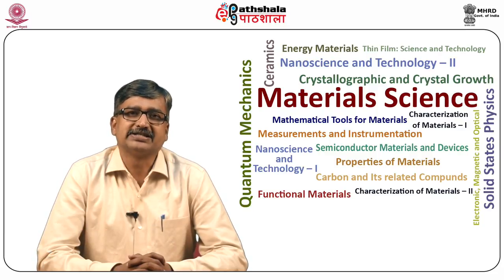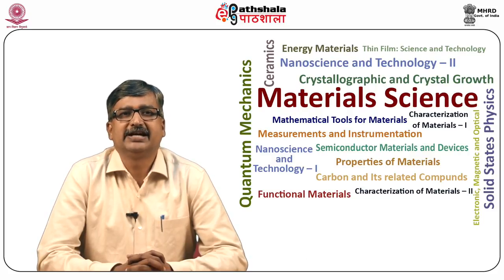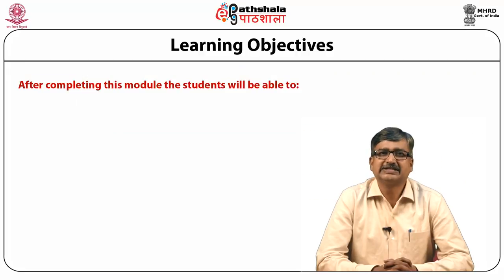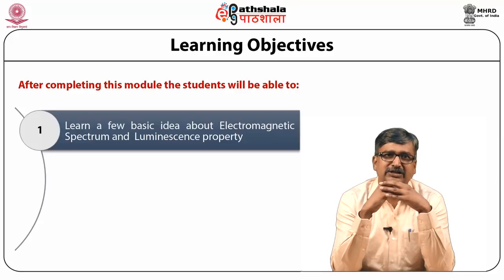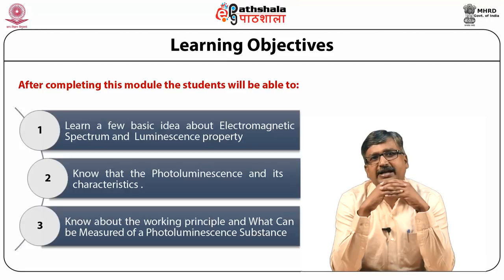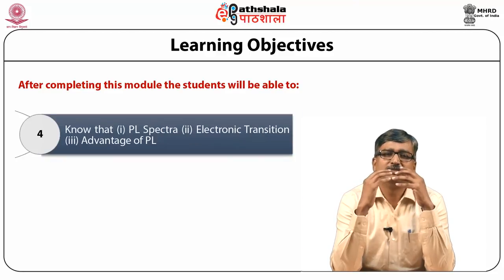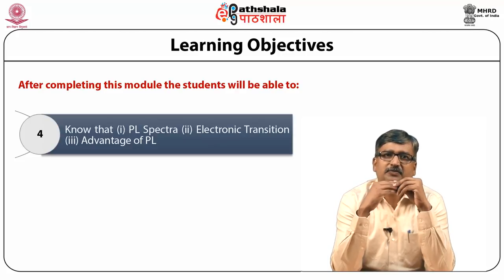Today we are going to discuss the module on photoluminescence spectra, which is called PL spectra, under the paper Nanoscience and Technology 2. After completing this module, the student will be able to learn basic ideas about electromagnetic spectrum and luminescence properties, photoluminescence and its characteristics, the working principle and what can be measured of a photoluminescence substance, PL spectrum, electronic transition, and the advantages of photoluminescence.